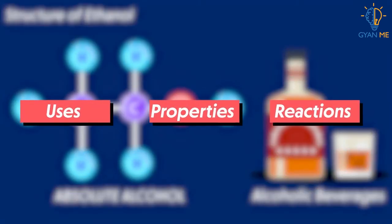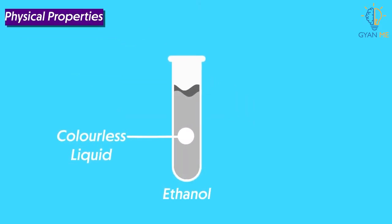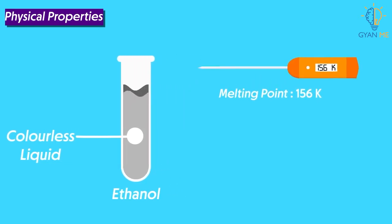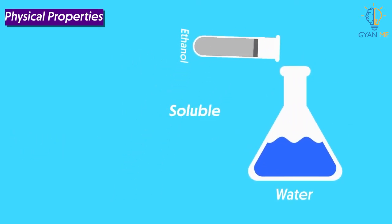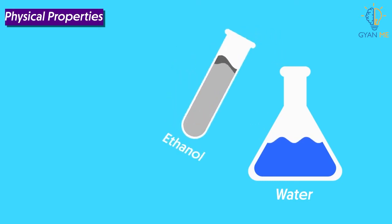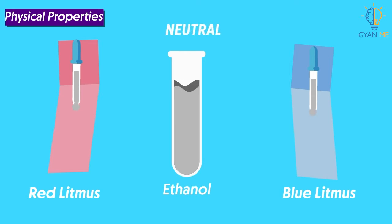Let us know the physical properties of ethanol. It is a colorless liquid at room temperature. It has a melting point of 156 Kelvin and a boiling point of 351 Kelvin. It is soluble in water at room temperature. When tested with litmus paper, the aqueous solution of ethanol appears neutral — it does not cause any change in the color of litmus, whether blue or red.